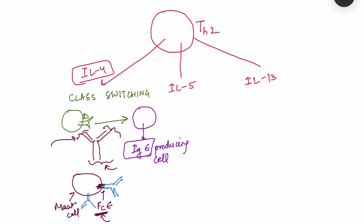The mast cell becomes bound with many IgE antibodies on its surface. This entire process — from the first exposure to the antigen, differentiation of T cells to TH2, class switching of B cells to IgE-producing cells, and IgE antibodies binding to mast cells — is known as sensitization.